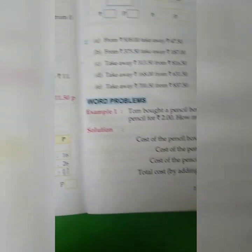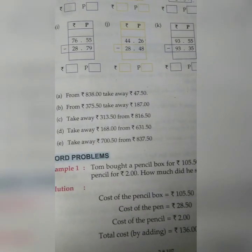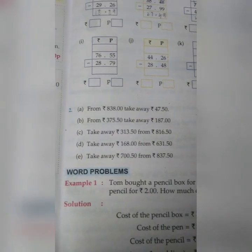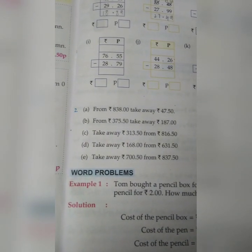The questions are given on page number 106 and 107 of your book. So question number 1 subtract the following you are going to do in your book and question number 2 we have to do in our notebook.